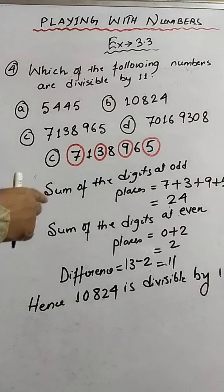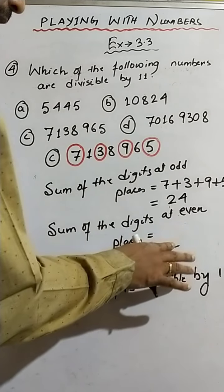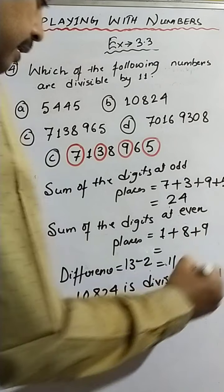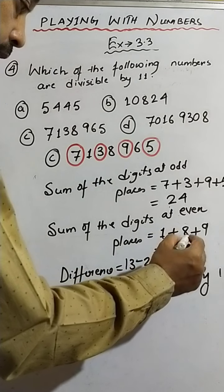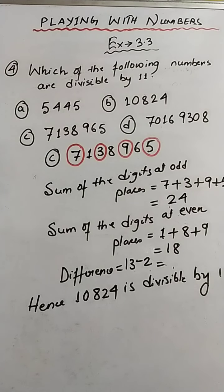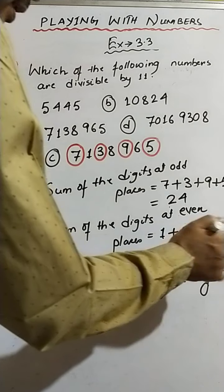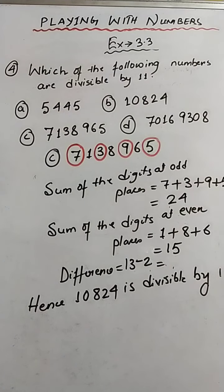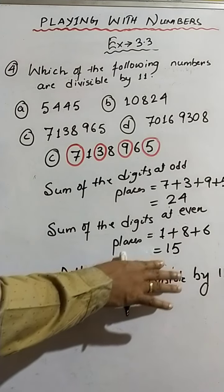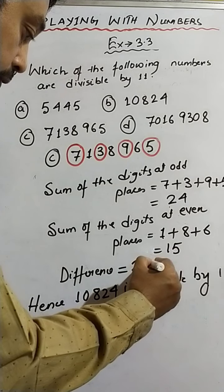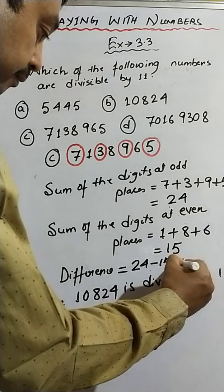Now the digits at even places are the numbers not encircled. We add them: 1 plus 8 plus 6, which gives us 15. Now we find the difference: 24 minus 15, that gives us 9.